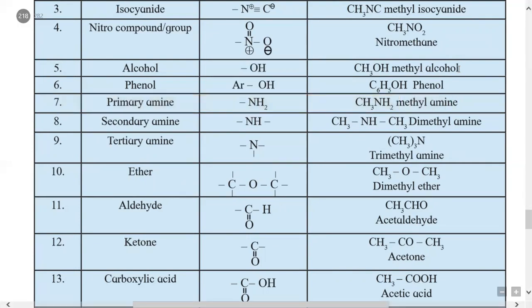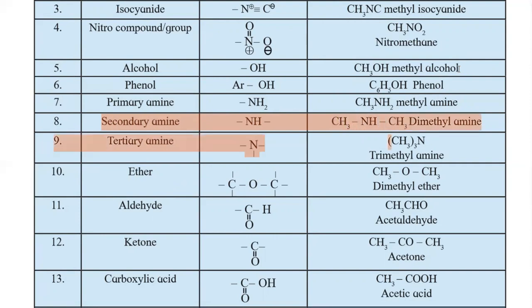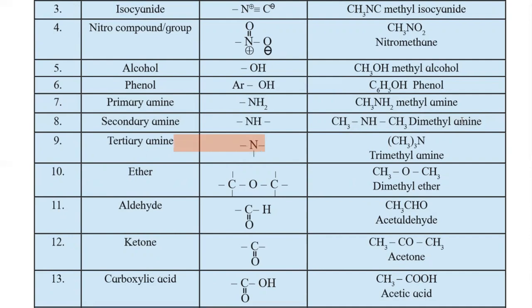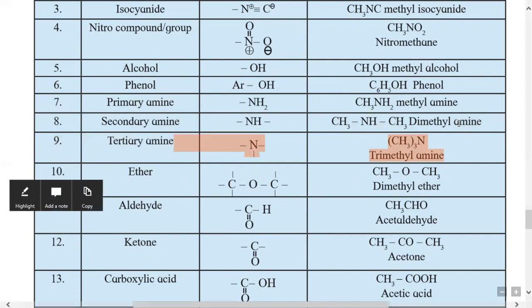Secondary amine has the functional group -NH-. Example: CH3NHCH3 has two methyl groups, so it is dimethylamine. Tertiary amine has N as the functional group with three different bonds. With three methyl groups, (CH3)3N is trimethylamine.